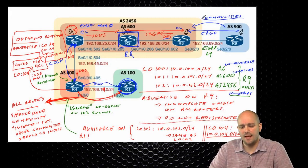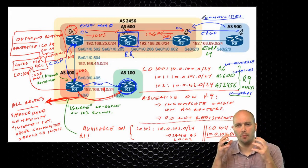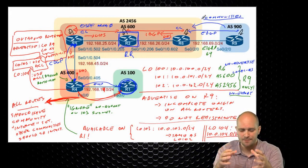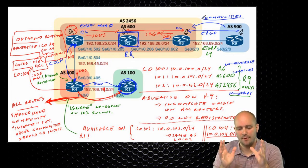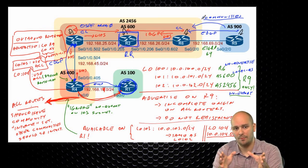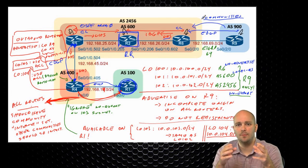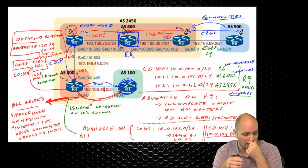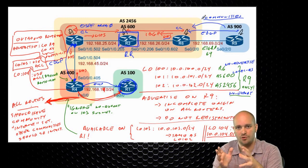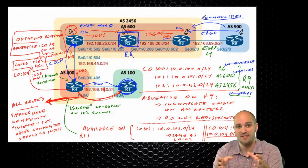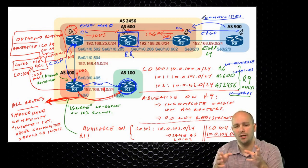If in the lab we come across a situation where there is a problem in the order the route map is being processed, is it better to use the continue statement or to reorder the route map? My recommendation is reorder the route map. The continue statement is really just a gimmick with very limited use. Unless you are restricted from reordering the route map, just reorder it. You will be far more in control with that than using the continue statement.